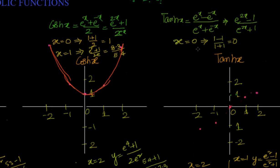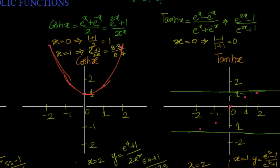Let us do a little analysis. As x becomes large, for example x equals 4, we get e^8 minus 1 divided by e^8 plus 1. It can never equal 1 because you are subtracting 1 in the numerator and adding 1 in the denominator, but it tends towards 1 and cannot exceed 1. So we have a limitation — the value will never cross 1 and never cross minus 1. That is how hyperbolic tan looks — it approaches the asymptotes y equals 1 and y equals minus 1 but never touches them.